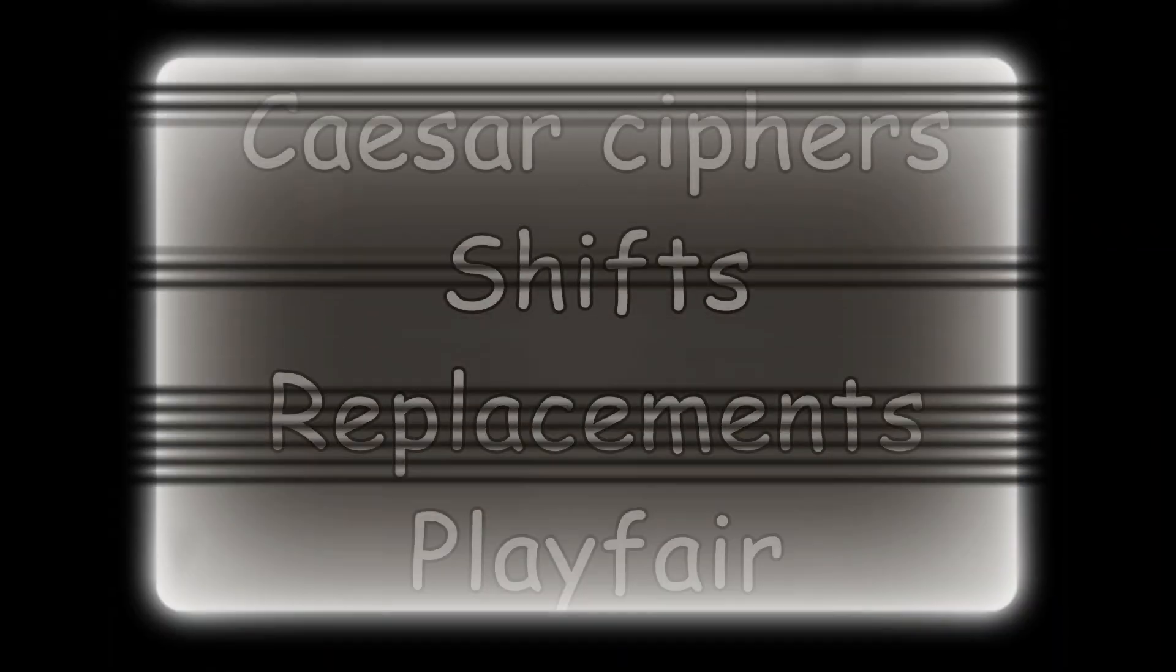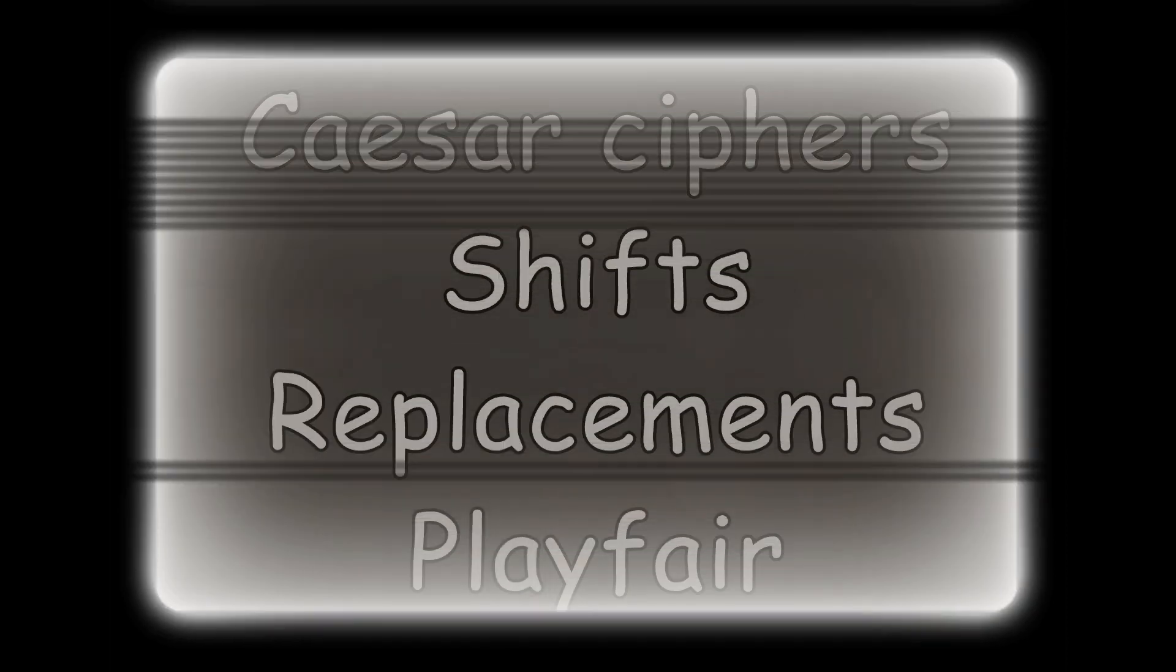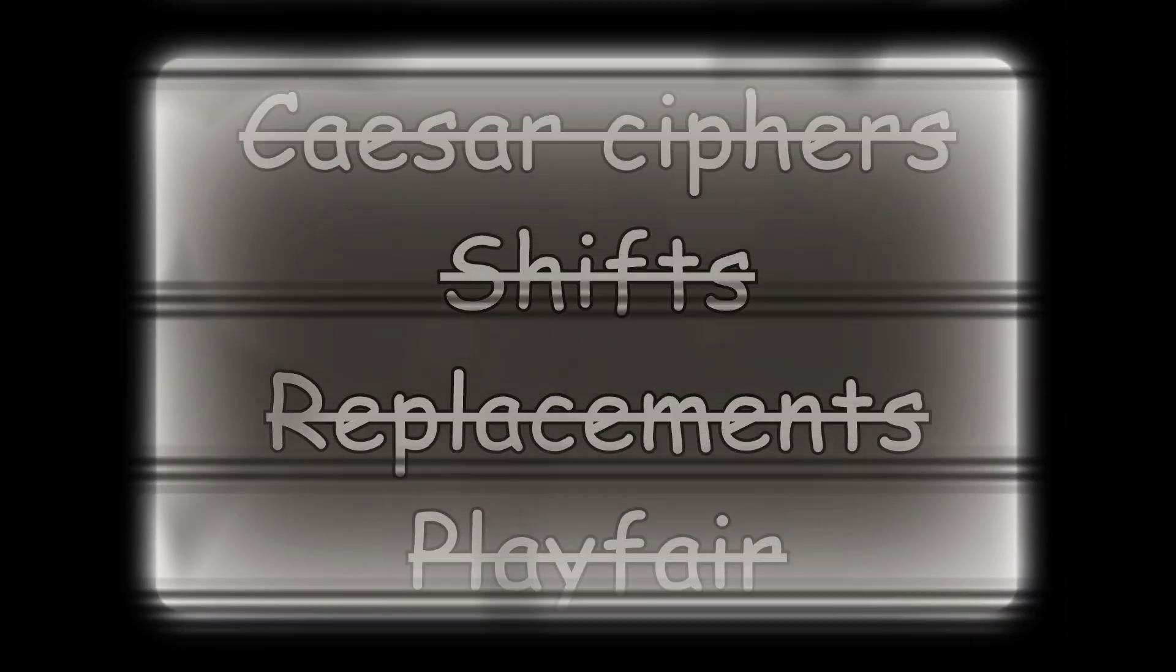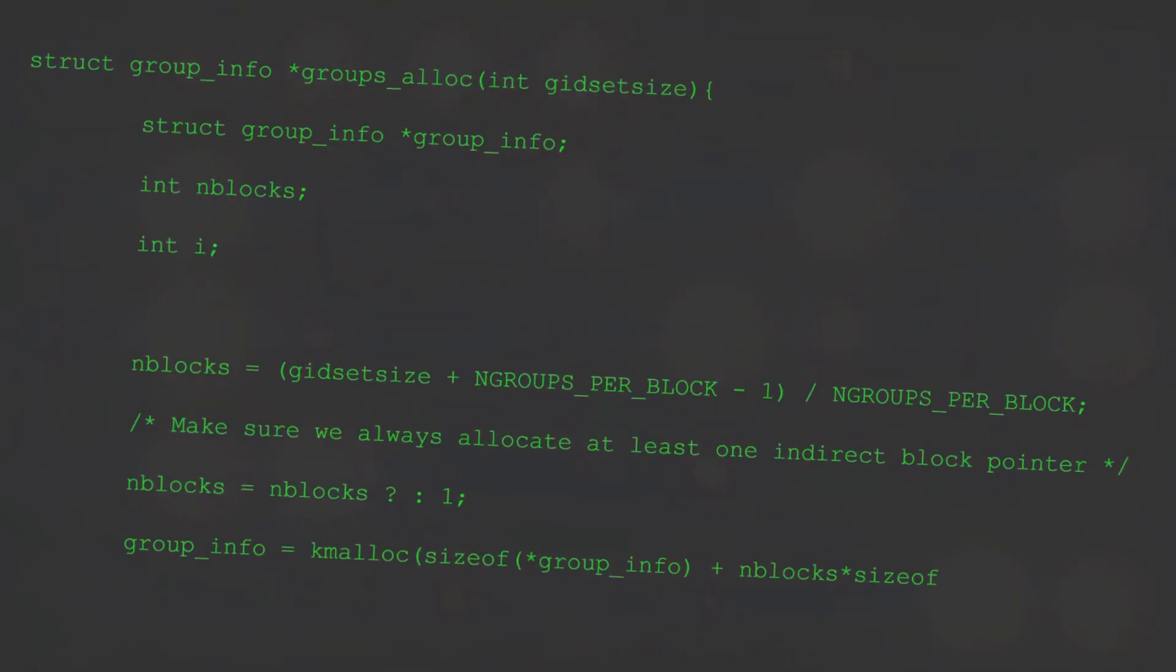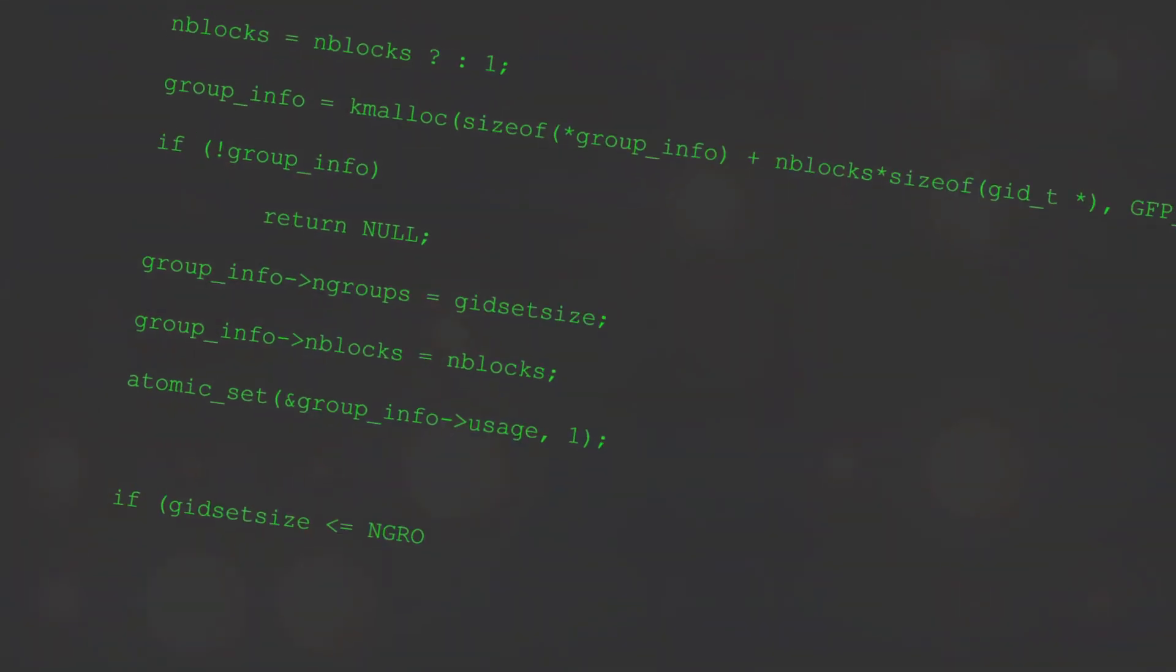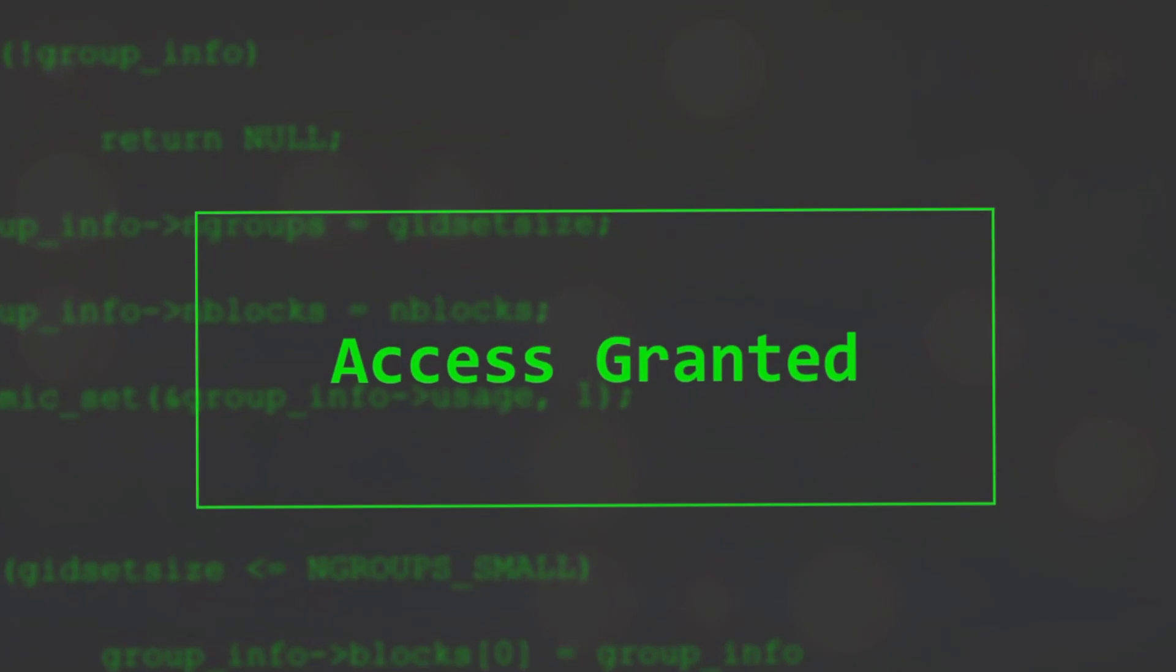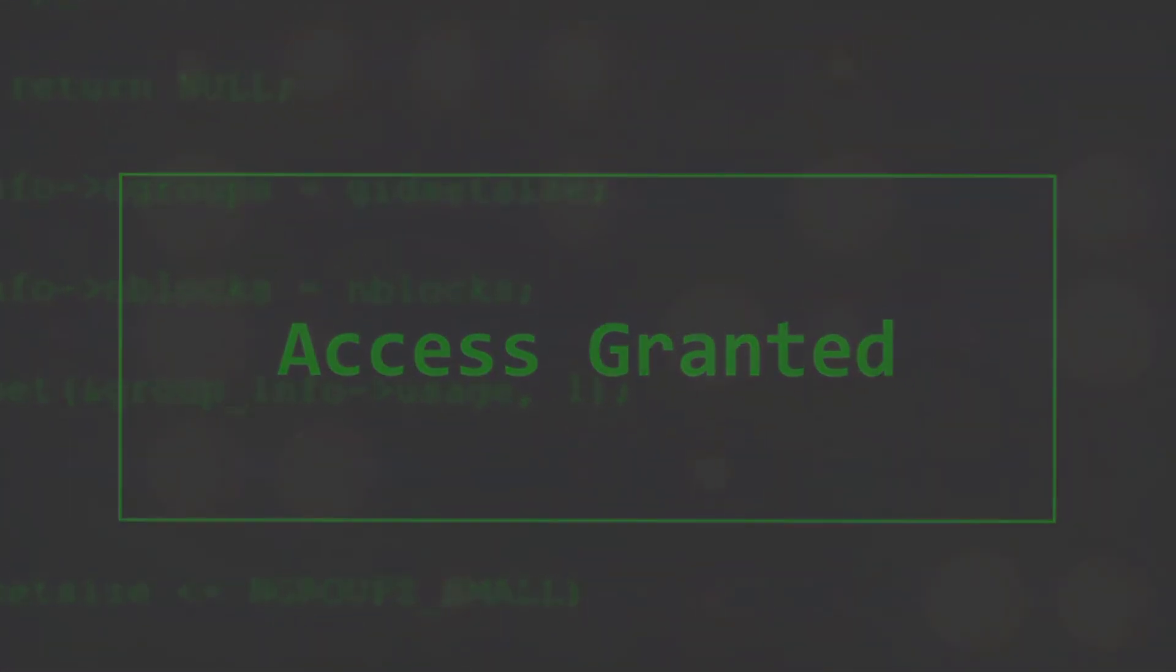We aren't going to talk about classical ciphers, also known as steganography cryptography. That is, we aren't going to discuss Caesar ciphers, shifts, character replacements or playfair type problems. A well designed Capture the Flag cryptography challenge should generally follow Kirchhoff's principle. That is, you should be able to see the entire cryptosystem, only the key needs to be kept secret. Lastly, we aren't going to talk about math. Or at the very least, we will aim to talk about math as little as possible.